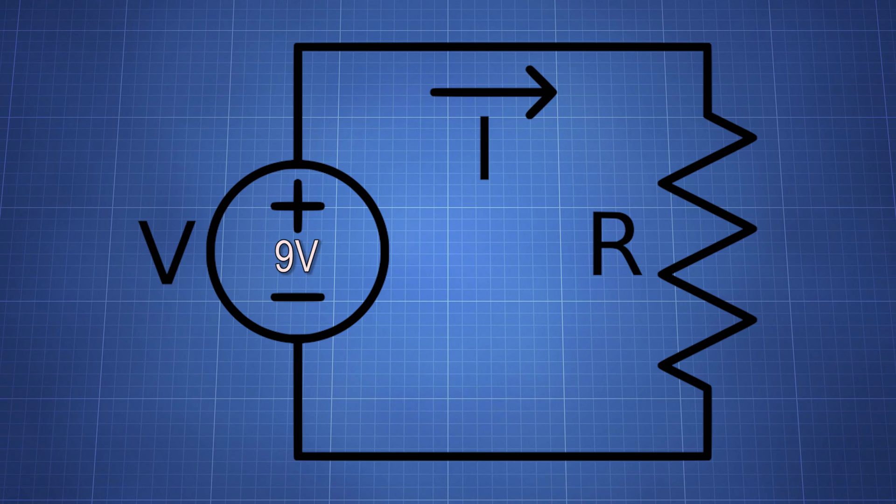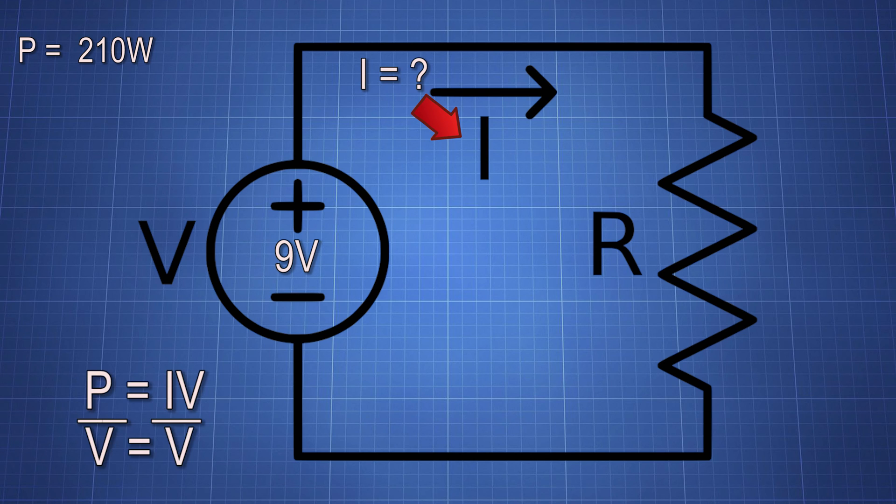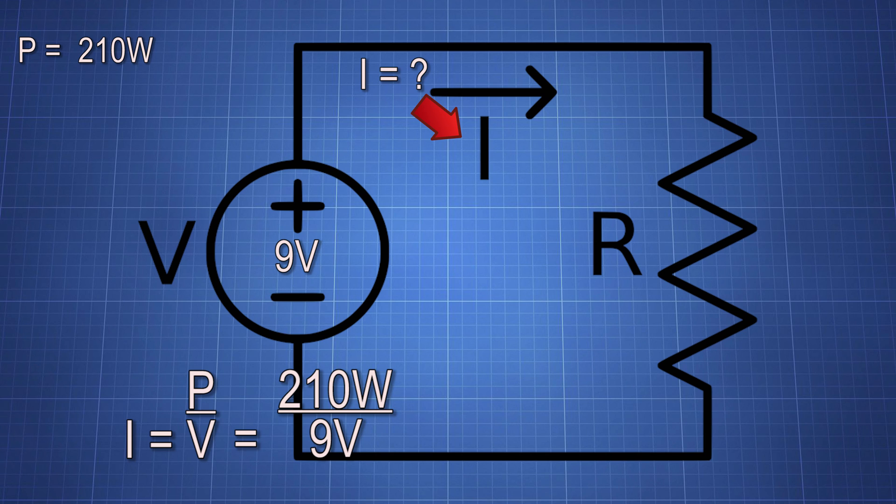Let's say that we have a voltage of 9 volts, a power of 210 watts, and we're looking for the current. Well, then we start with P equals I times V. We divide both sides by the voltage and we get our equation to be I equals P over V. If we plug in our power and our voltage, we get the current to be 23 amps.